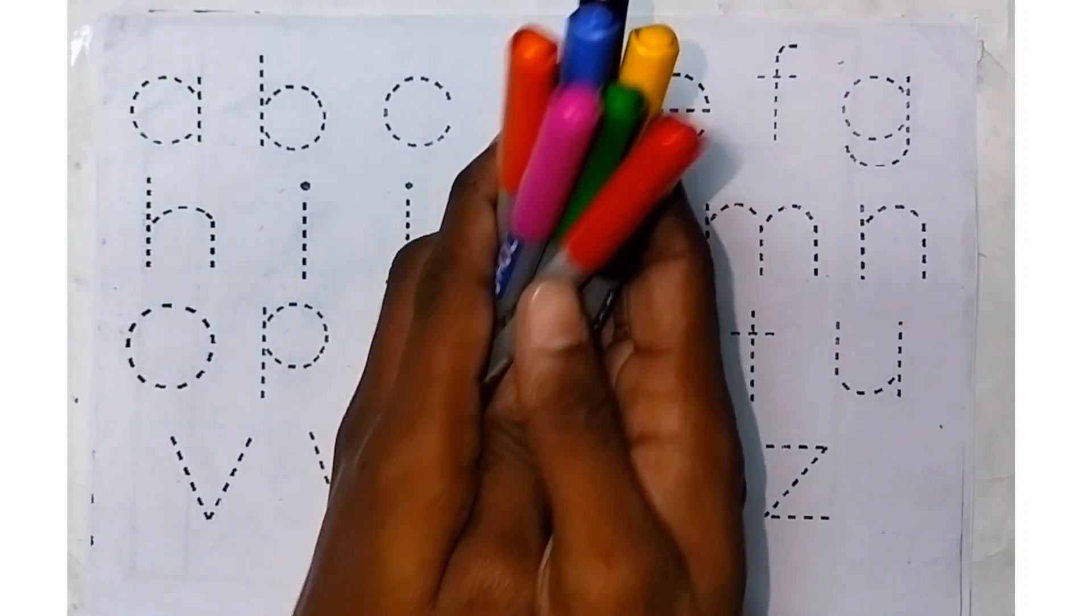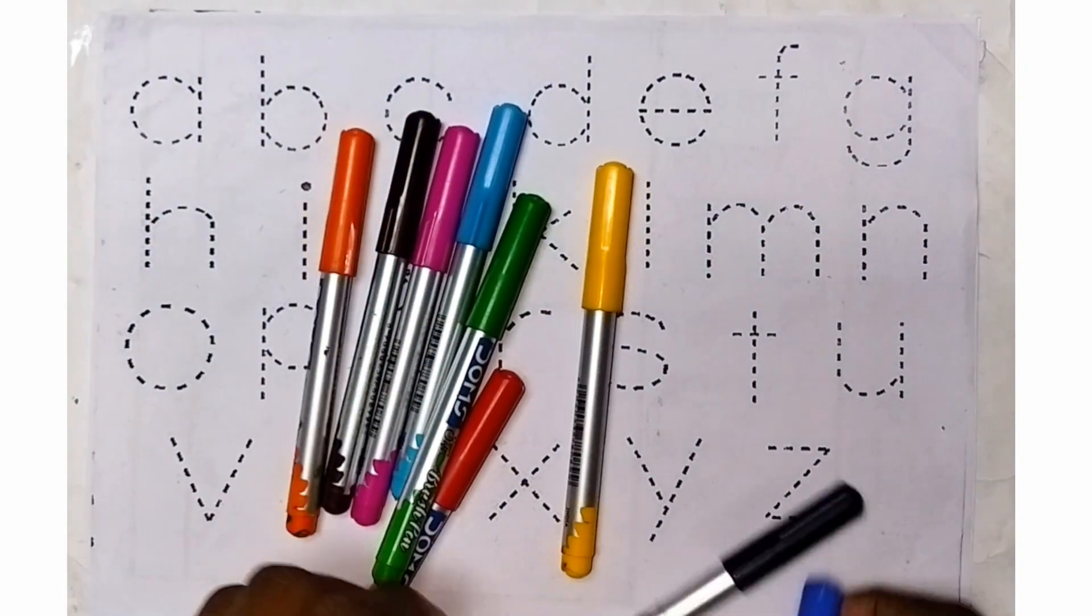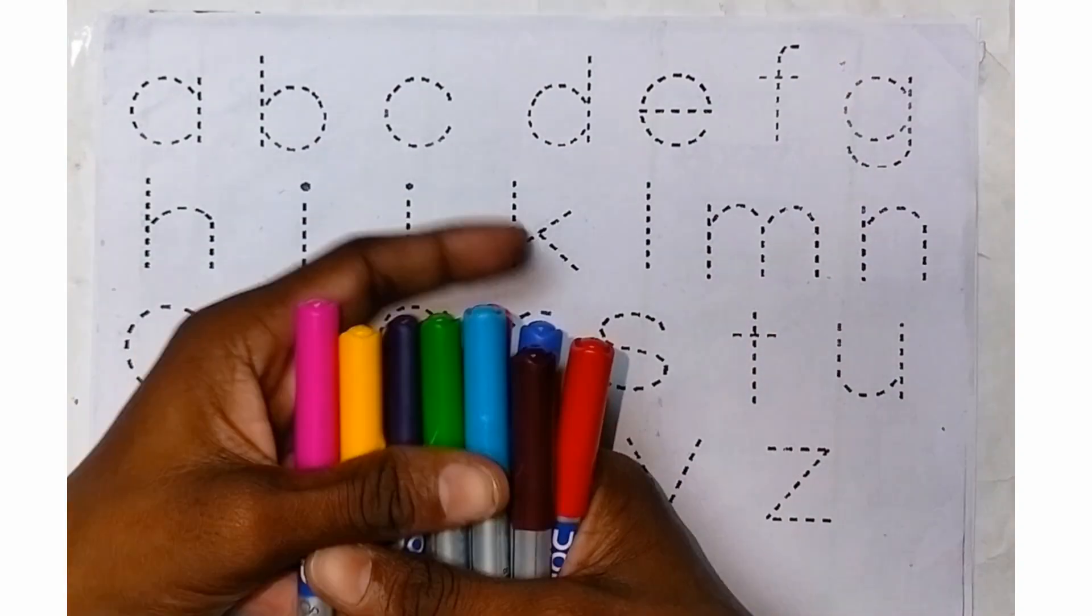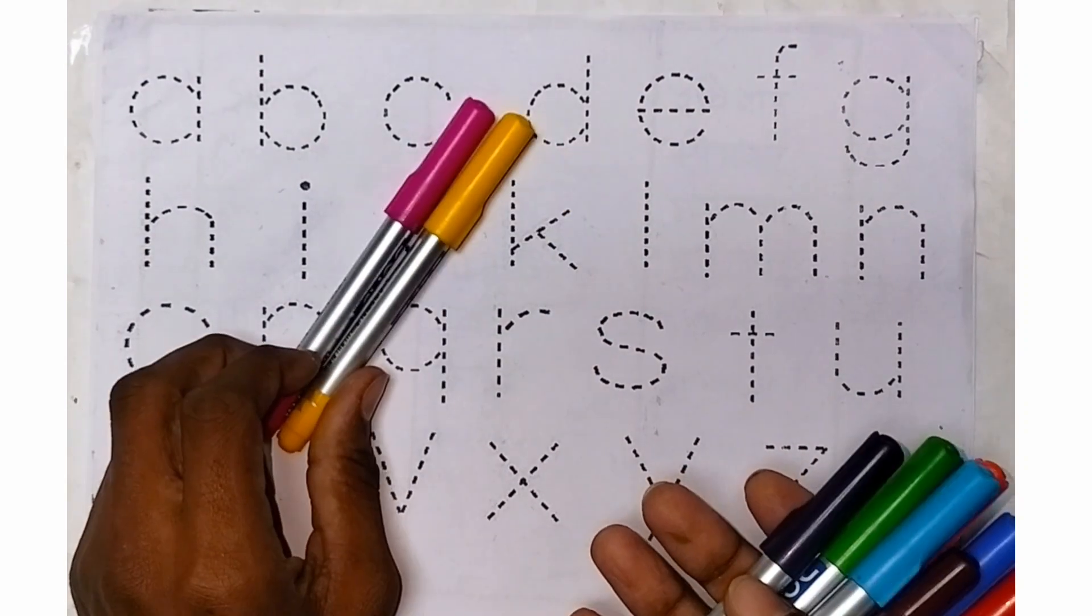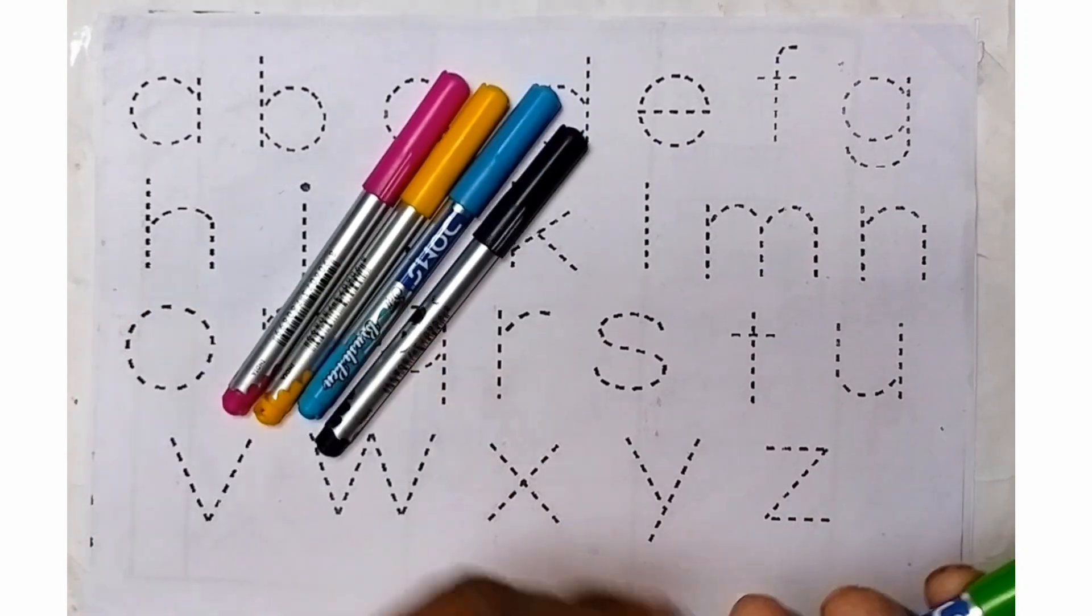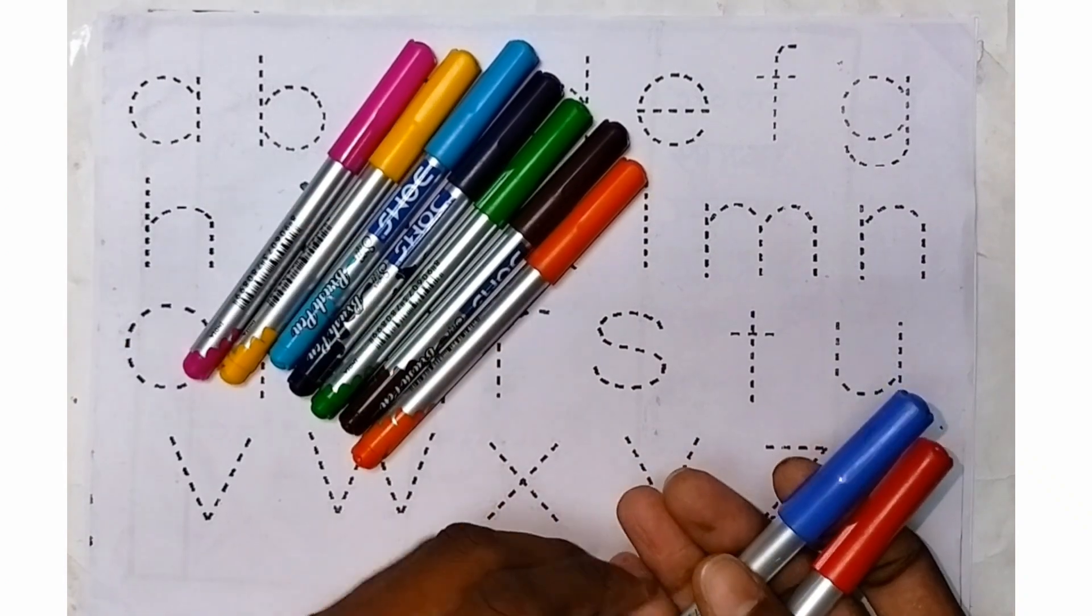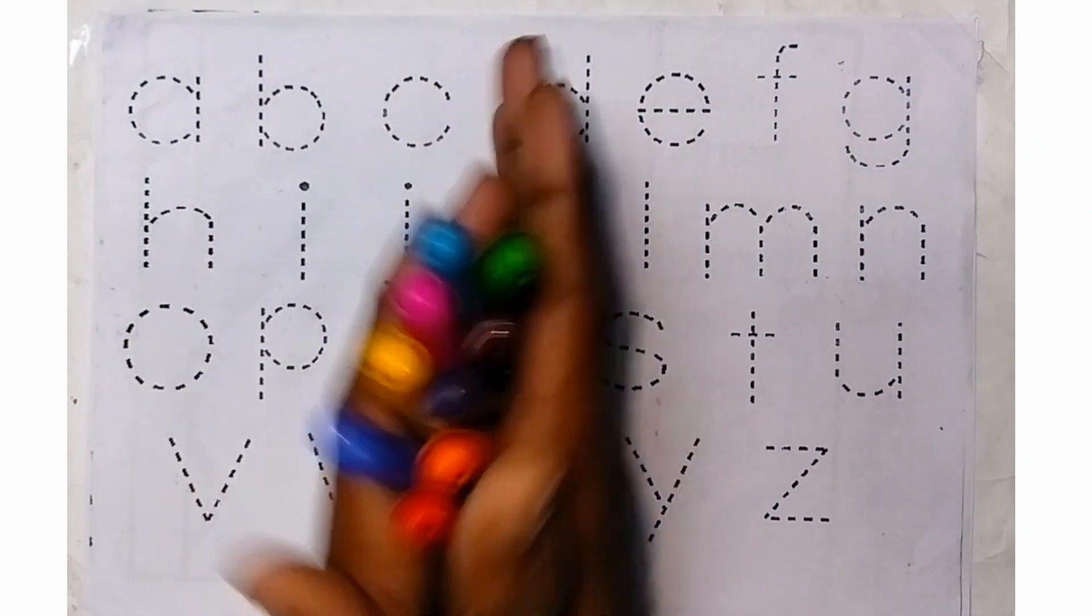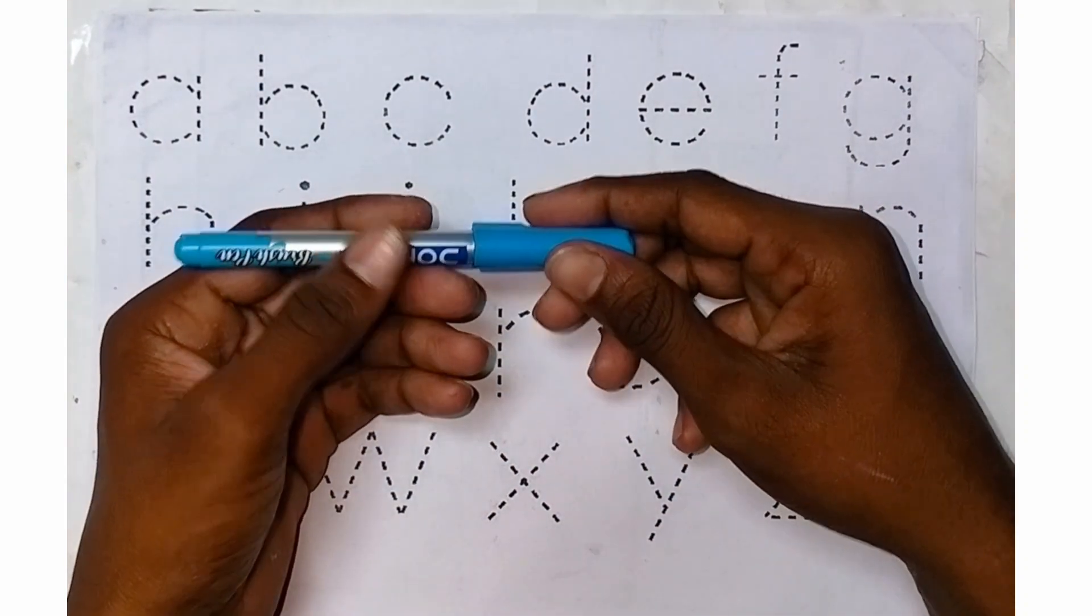Hello kids, welcome to this channel. Today we are learning about alphabet small letters, means baby letters. Let's start learning some colors: pink color, yellow color, sky blue color, purple color, green color, brown color, orange color, blue color, red color. So let's start, it's sky blue color.